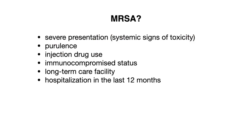You might be wondering when we need to cover for MRSA — generally speaking, MRSA coverage is needed in high-risk patients. This includes a wide variety of situations, but a few examples are: severe presentation with systemic signs of toxicity, purulence or abscess development, injection drug use, immunocompromised status, residing in a long-term care facility, or hospitalization in the last 12 months.